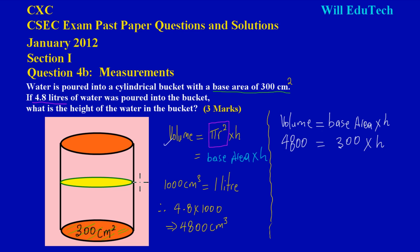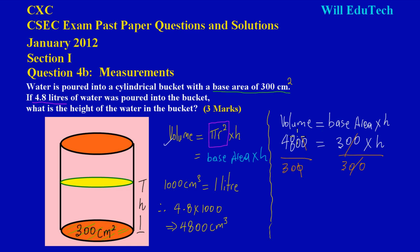That's the height we're trying to find right there. Three hundred is multiplying h, so by transposition we divide both sides by 300. The 300s cancel, and we're left with 4800 divided by 300. Three into 48 goes 16 times, so therefore the height h is equal to 16 centimeters.